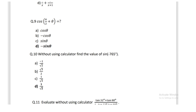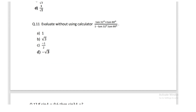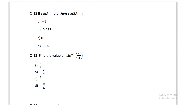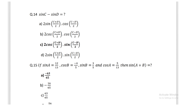Evaluate using calculator: 1032° + 1088° gives −√3. Question: if sin A = 0.6, then sin 3A = 0.936. Find the value of sin⁻¹(−1/2); its value is −π/6.